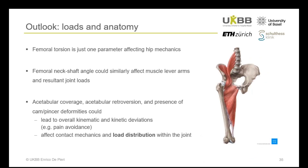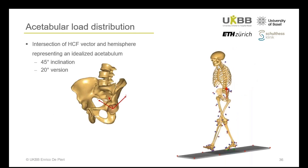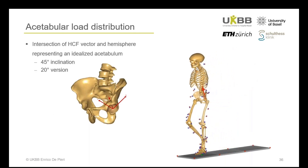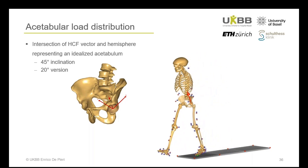Morphing femoral torsion is just one of many parameters that can affect overall hip mechanics. The femoral neck-shaft angle, for instance, could similarly affect muscle lever arms and resulting joint loads. Additionally, clinically relevant parameters such as acetabular coverage, acetabular retroversion, and the presence of cam and pincer deformities could lead to kinematic and kinetic deviations. To illustrate this, we took the hip contact force vector and intersected it with a hemisphere representing an idealized acetabulum with 45 degrees of inclination and 20 degrees of anteversion, plotting the intersection as a contact force pathway.